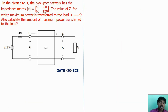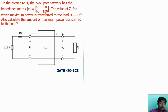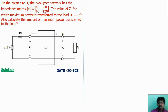This question is asked in the GATE 2020 examination. The objectives are: first, we have to find the ZL load impedance under the maximum power transfer condition; second, we have to find the amount of maximum power transferred to the load.